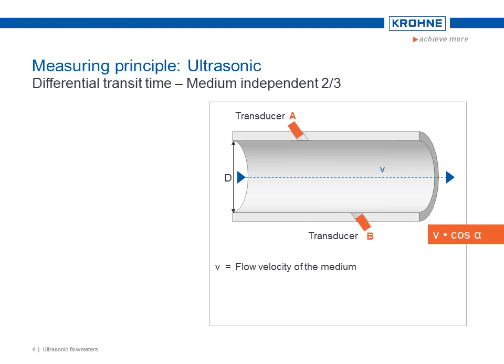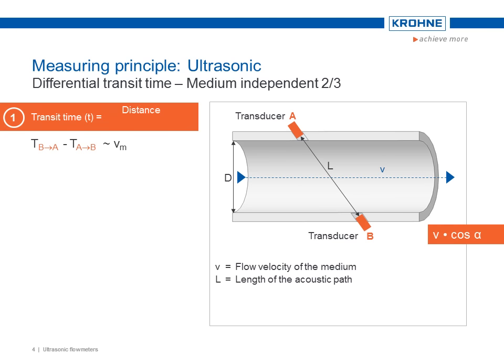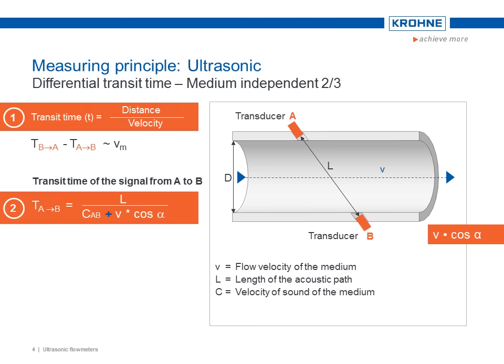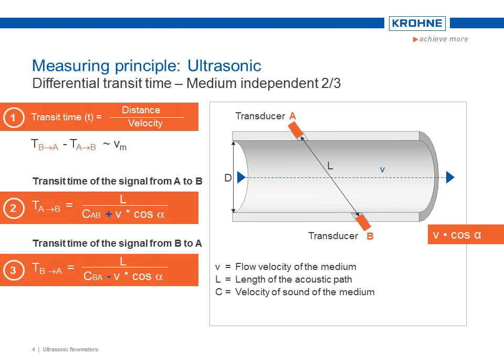Let's see why ultrasonic flow measurement is completely independent of the medium. As we can see in equation 1, the transit time of a signal is the distance between transducer A and transducer B, divided by the velocity which the acoustic signal needs to travel from one transducer to the other. Equations 2 and 3 describe the time the acoustic signal needs from transducer A to transducer B, and from transducer B to transducer A.